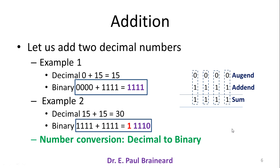The binary number for 15 is 4 1s. When we add 4 1s with another 4 1s, the answer is 1, 1, 1, 1, 0. So, let us see whether we get this result or not by simulating in logism software.